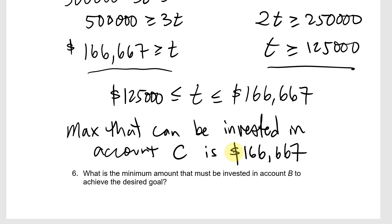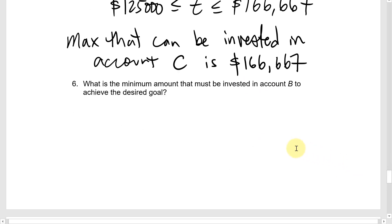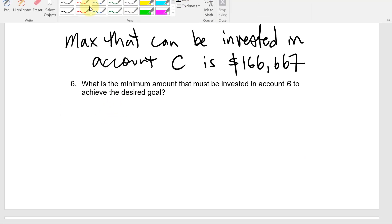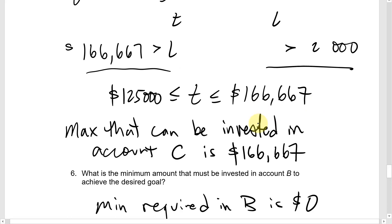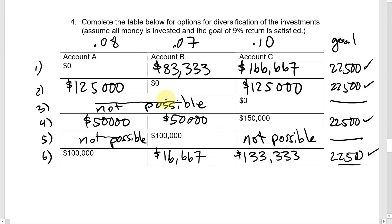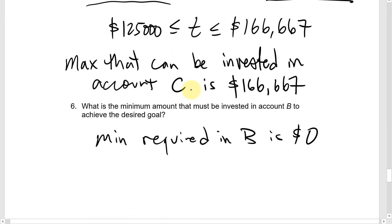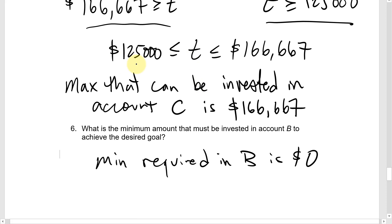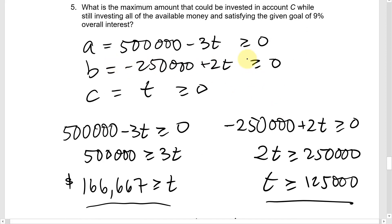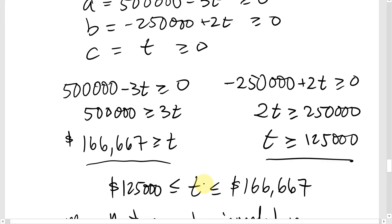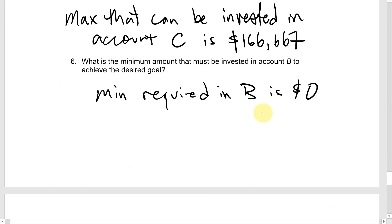Question 6: What is the minimum amount that must be invested in account B to achieve the desired goal? We could invest $0 in account B, as seen in the table — just split the money between accounts A and C. The minimum for account B is zero, which occurs when t = 125,000, putting $125,000 in each of A and C.